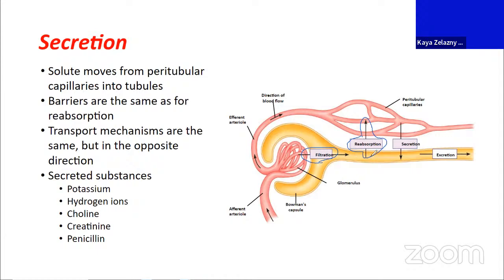Continuing with these directional processes, we also have the possibility of moving things from the peritubular capillaries—from the continued bloodstream—into the nephron later on. This is the same direction as filtration, but it's not happening at the head of the nephron between the glomerulus and Bowman's capsule. It's happening in our proximal tubule, and potentially later on as well. That process is called secretion. When we say we secrete a substance into the nephron, we mean that somewhere later in the process, we added it into the filtrate at a later date.